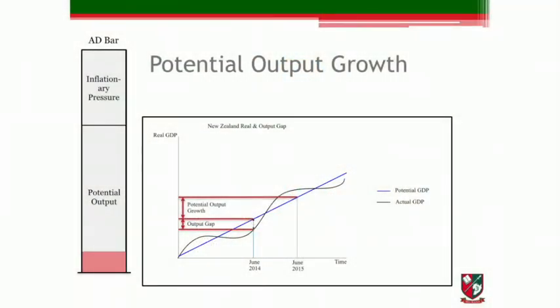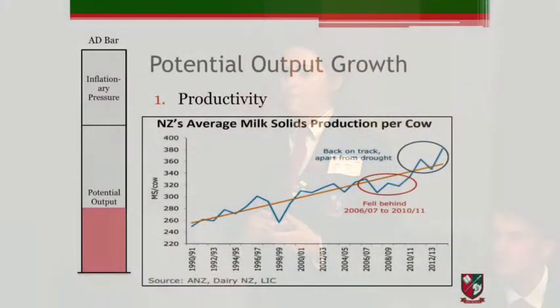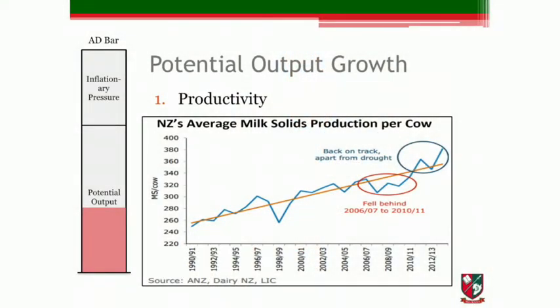Now to potential output growth — this is how much potential GDP is forecast to grow. Growth will come from three main areas. Firstly, through rising productivity, due to the implementation of new technology and the benefits of previous investments. An example of rising productivity is the increase in milk solid production per cow, which as you can see here is two years ahead of trend. Higher productivity means more output is gained from current resources, increasing potential output.